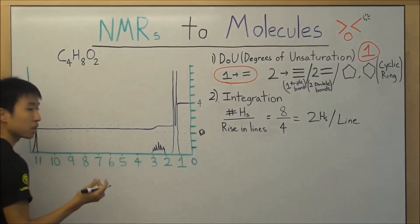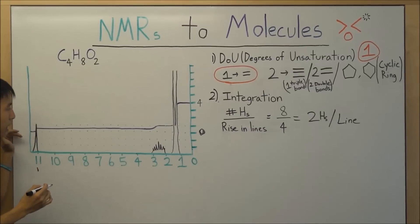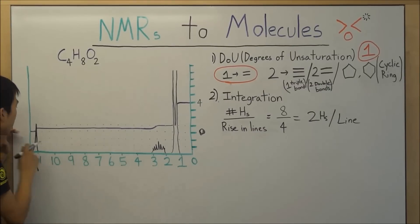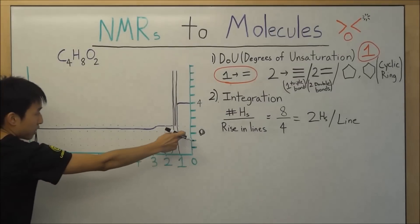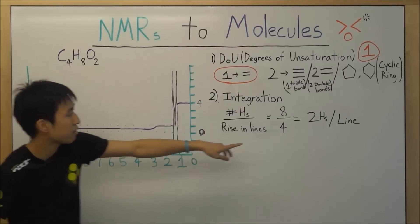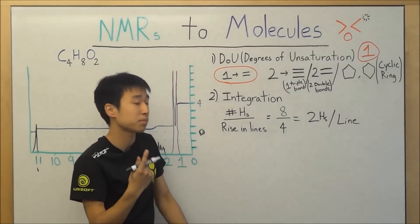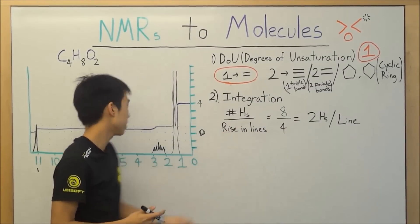So next step is you come over to your NMR and you basically figure out how the baseline has changed at each peak. So at this one over here, we started off at basically, well, let's say zero and we went up by one half of the line. So one half of the line is going to be one hydrogen because two hydrogens is if your line goes up at one.